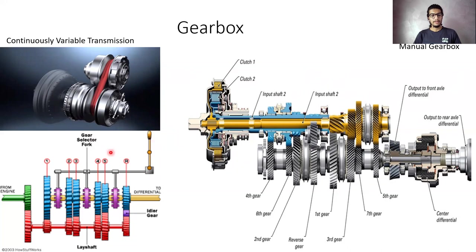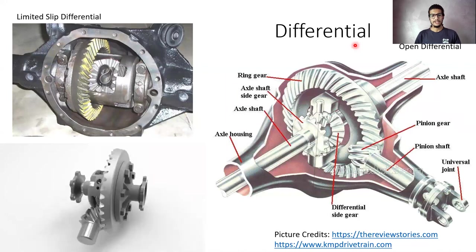In the bottom left, you can see the diagrammatic representation of the manual transmission. Here with the shifter, we can move the gear as and when required, and the clutch helps us to do that. Now, coming to the next component, that is the differential.